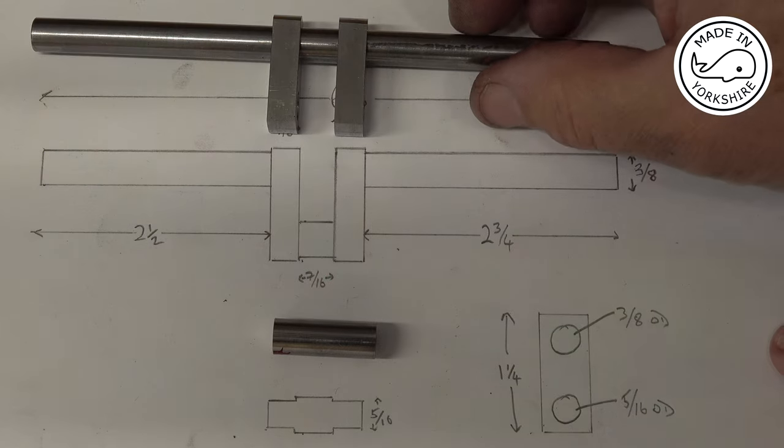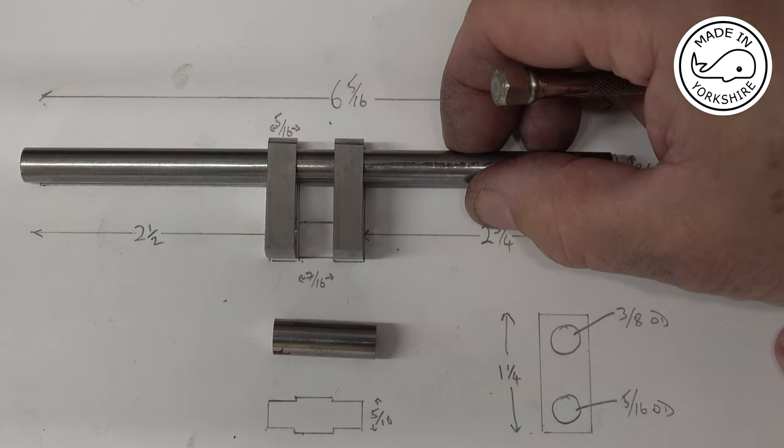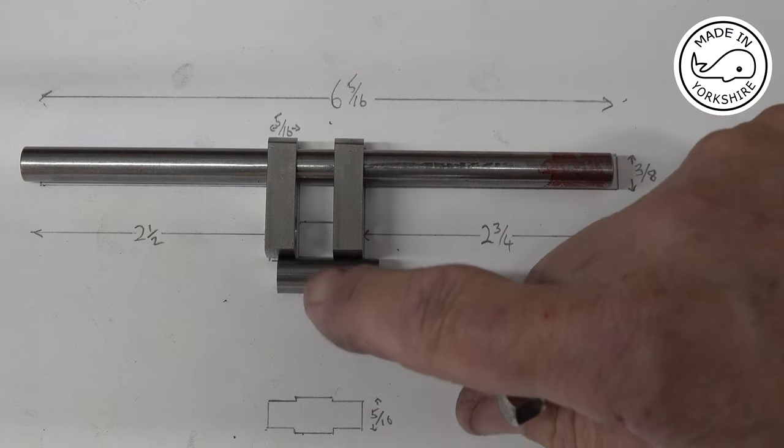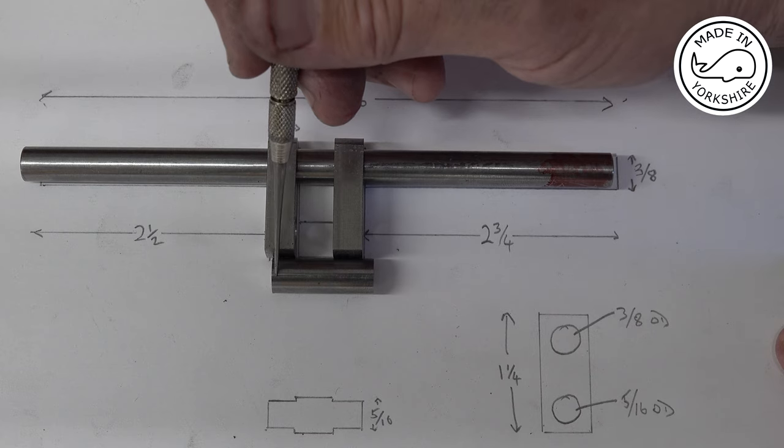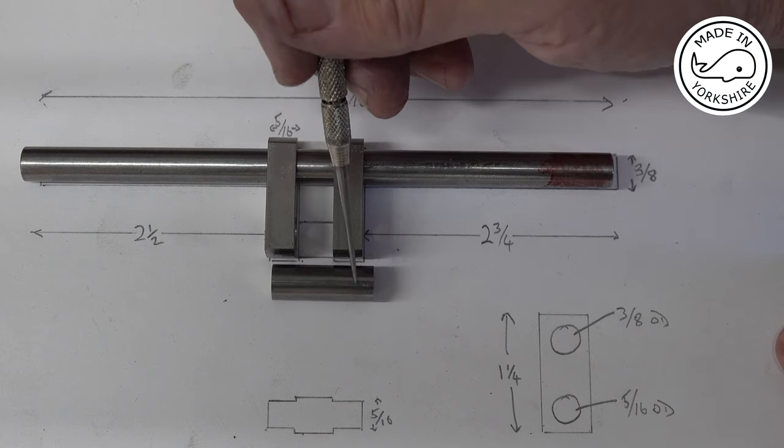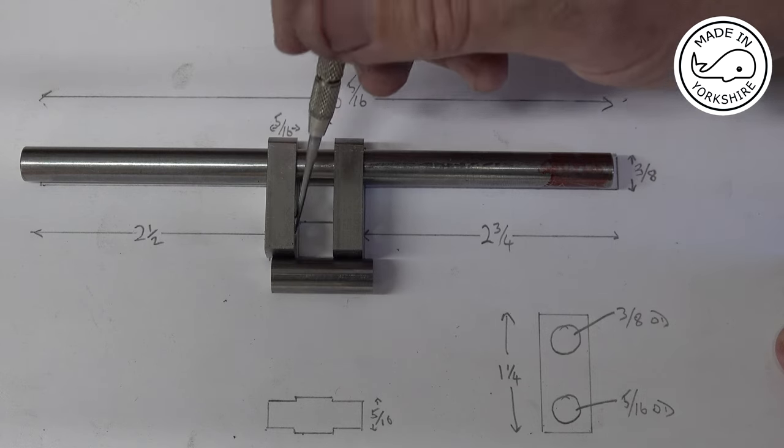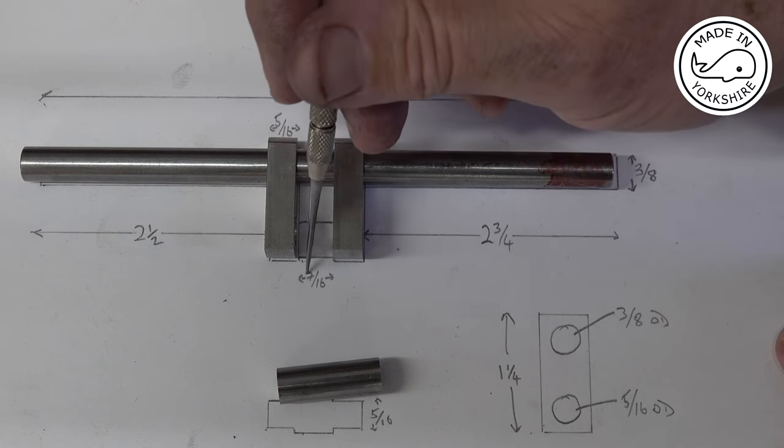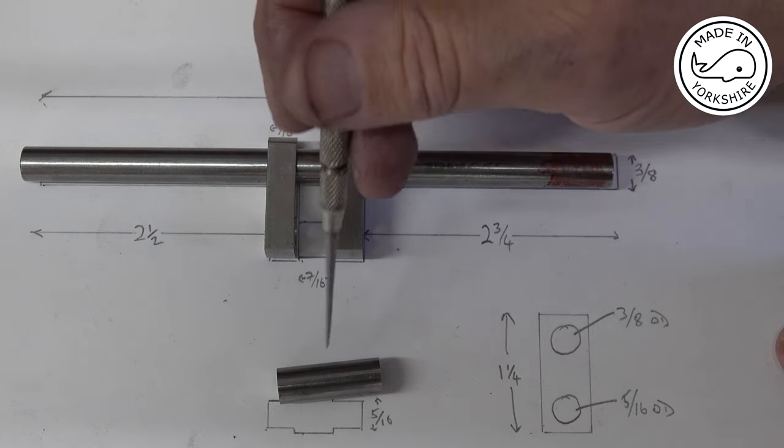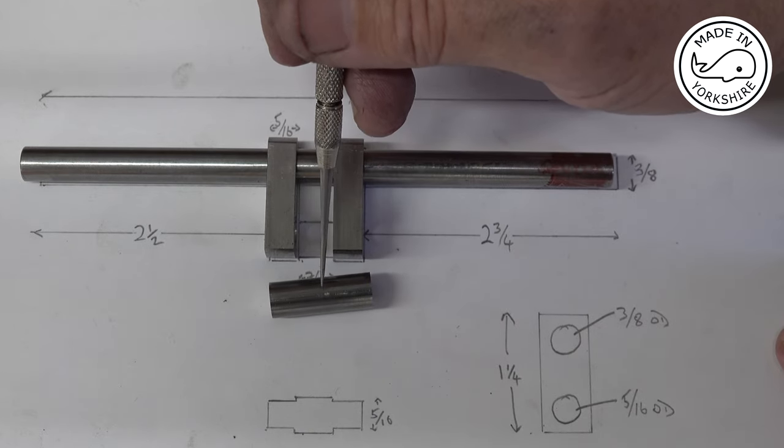Well that seems to have turned out okay. So now for the crank pin, what I need to do is to turn these outside diameters down to five sixteenths of an inch so they can fit in the crank webs. But I need to leave the gap seven sixteenths of an inch at three eighths of an inch in diameter.